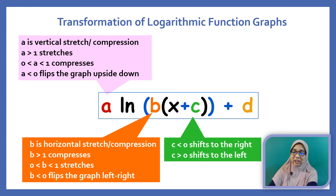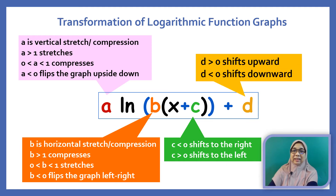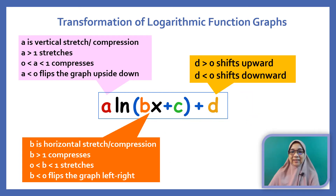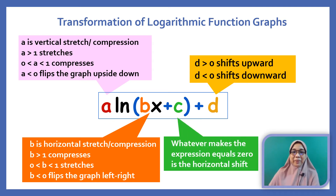C is the horizontal shift — when C is negative, the graph shifts to the right; when C is positive, the graph shifts to the left. D is the vertical shift — when D is positive, we shift upwards; when D is negative, we shift downwards. Here is the second method: find the value of x such that Bx plus C equals 0. If x equals negative C over B, the graph shifts left; if x equals C over B, the graph shifts right.